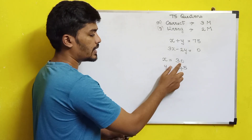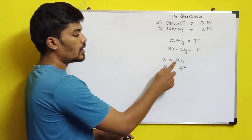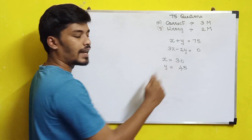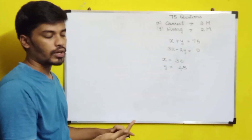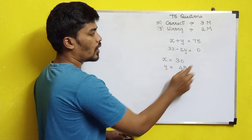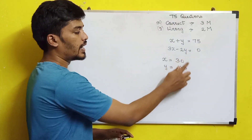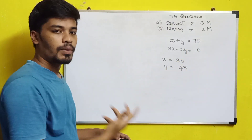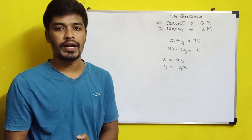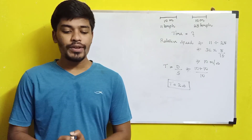Solving these two equations gives us x equals 30 and y equals 45. So there are 30 correct answers and 45 wrong answers. Verification: 30 times 3 equals 90 marks, and 45 times minus 2 equals minus 90. So 90 minus 90 equals 0. The answer checks out — 30 questions were answered correctly.